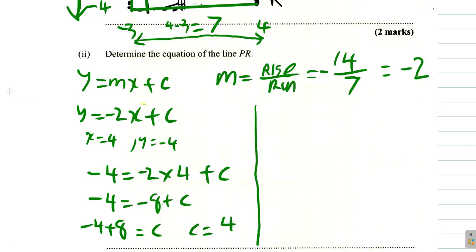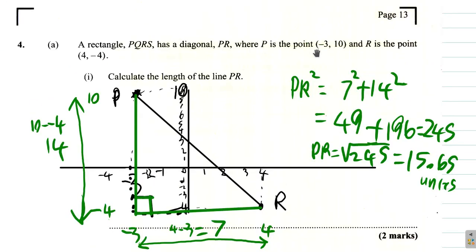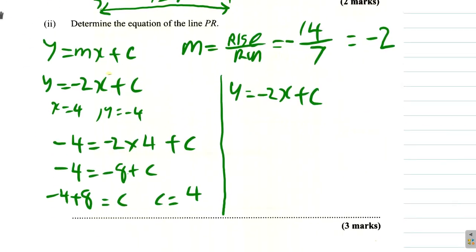Suppose we had tried the other point and we say y equals negative 2x plus c and we use x equals negative 3, y equals 10. So 10 equals negative 2 times negative 3 plus c. So 10 equals positive 6 plus c. So when we subtract 6 from both sides we get 10 minus 6 equals c, so c is 4, same thing.